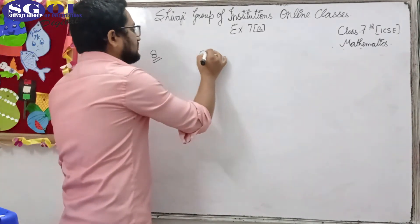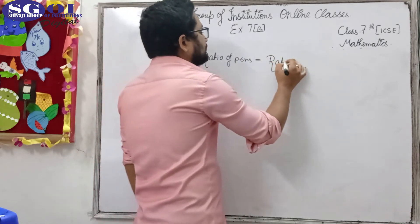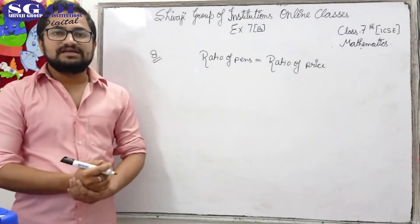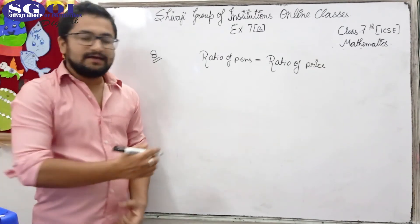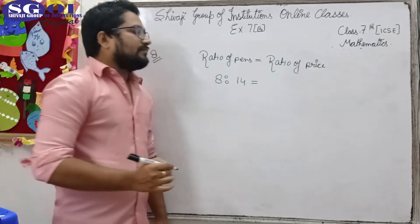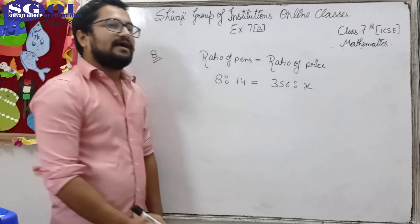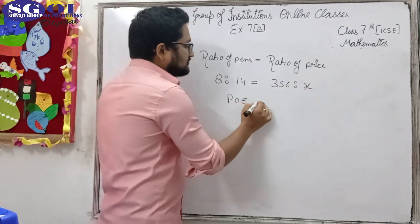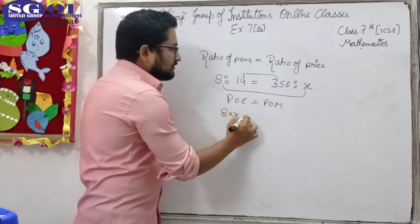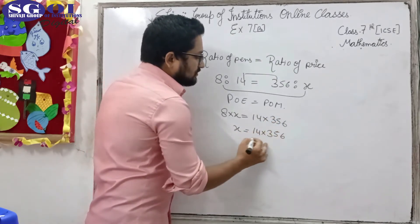We set up the ratio of price. The ratio of pens to price: 8 pens cost 356 rupees, and 14 pens cost x rupees. We let the unknown cost be x. Using the rule — product of extremes is equal to product of means — we get 8 × x equals 14 × 356.